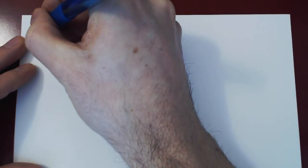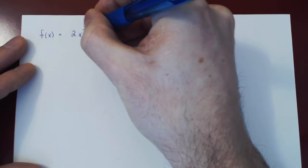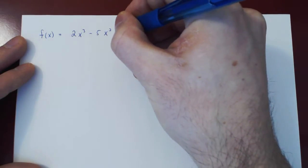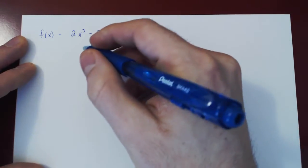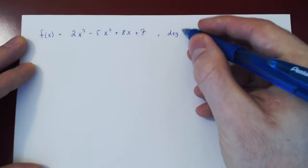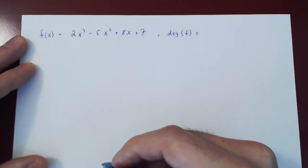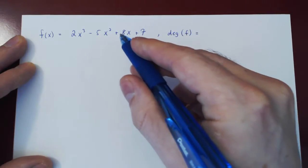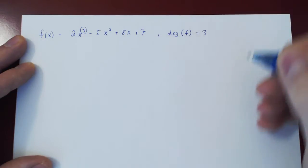Before we look at how to prove this, let's quickly go over the idea of the degree of a polynomial. Starting with f of x equals 2x cubed minus 5x squared plus 8x plus 7, the degree — written as deg — is simply the largest power of x that shows up in the polynomial. Here the largest power of x is 3, so the degree of f is equal to 3.